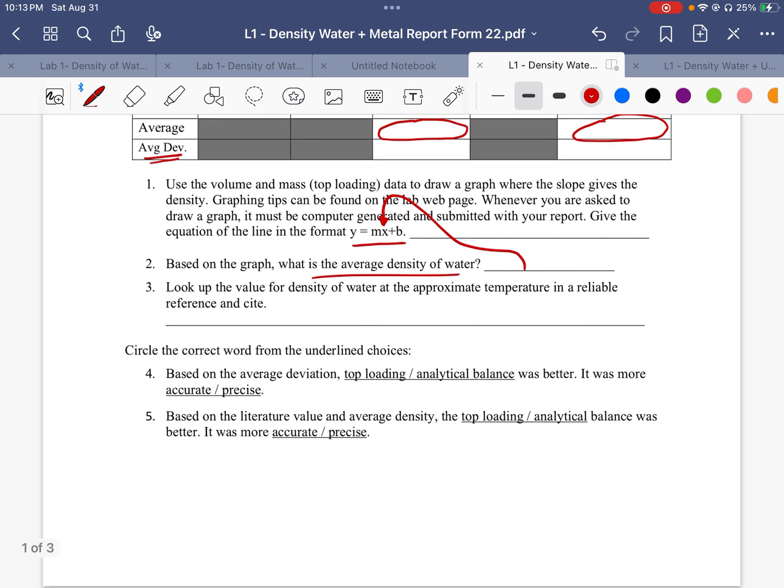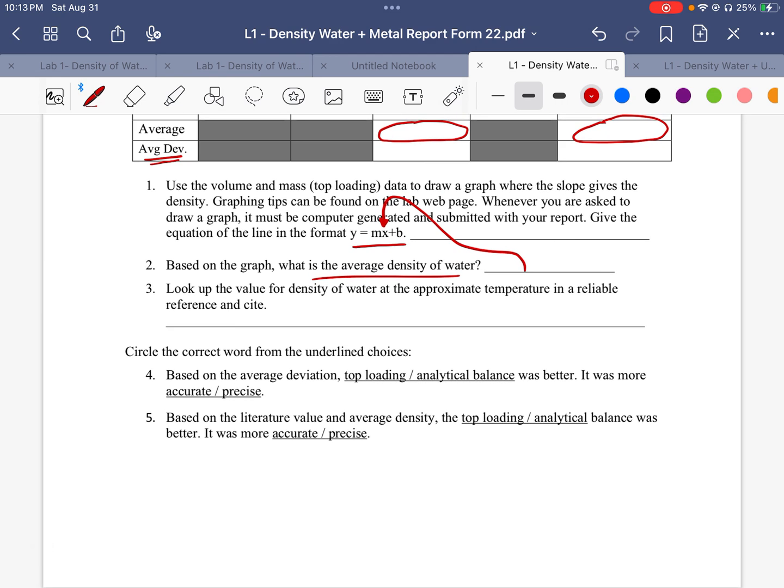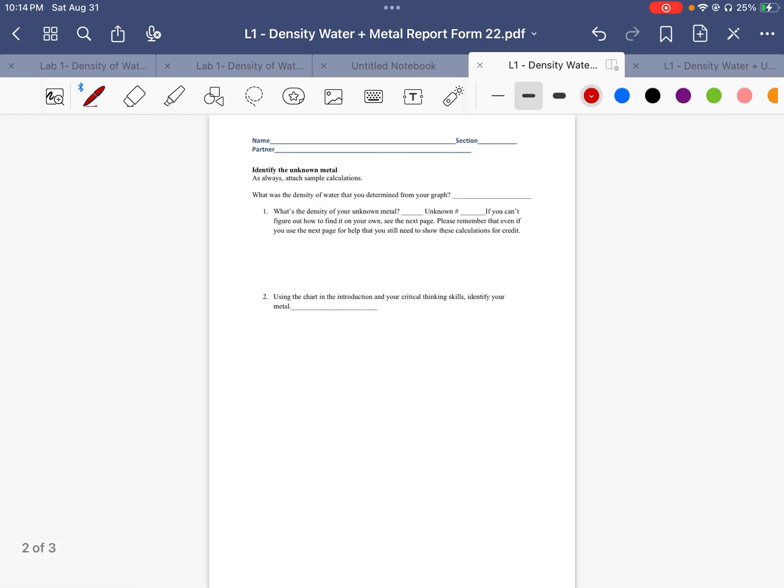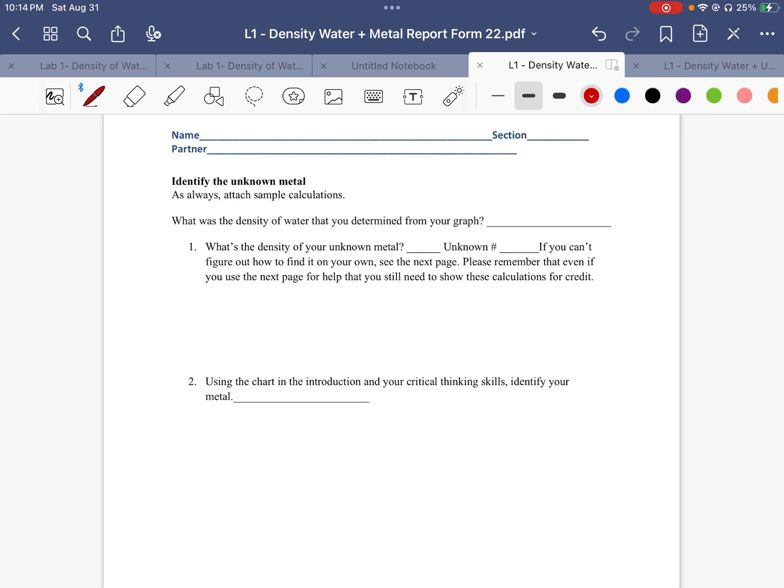And then it's got a couple questions for you to ask. And then the last thing that it wants you to do, which is actually the second part of the lab, is it wants you to find the density of the unknown metal and then identify it.